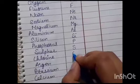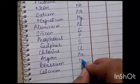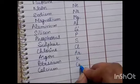Sulphur is S. Chlorine is Cl. Argon is Ar. Potassium is K. Calcium is Ca.